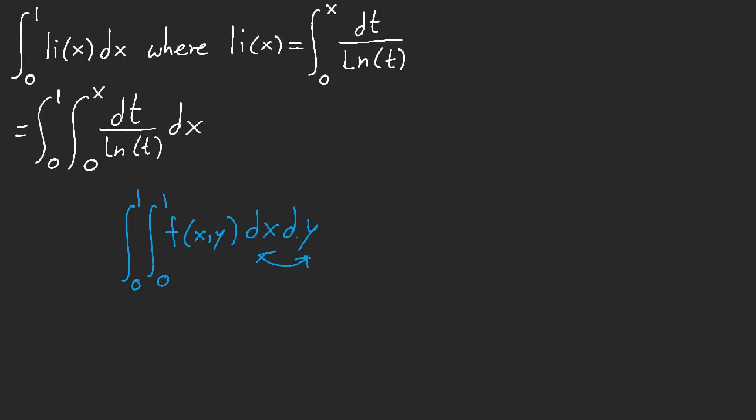We can absolutely interchange because these are just constants. Same goes with even with infinity. You can go ahead and interchange because Fubini says so. And we can interchange naturally because we don't have a variable.